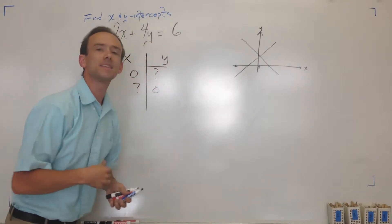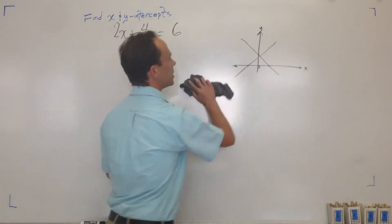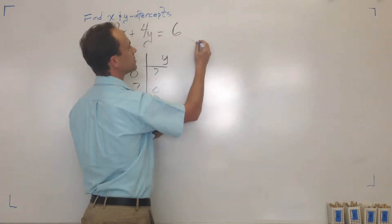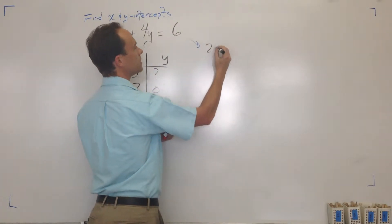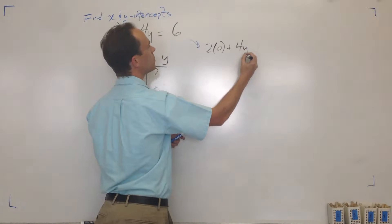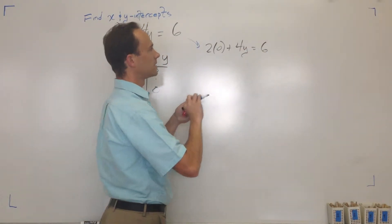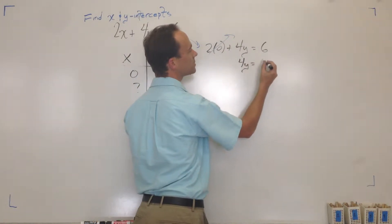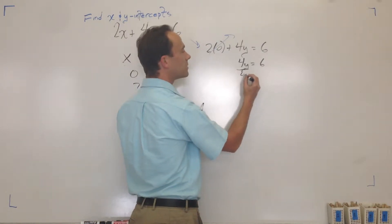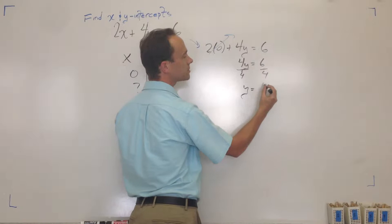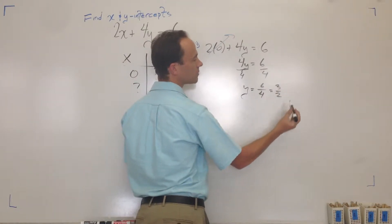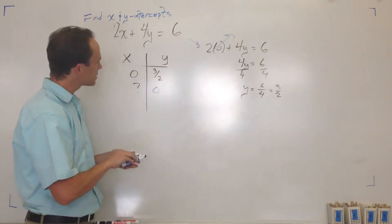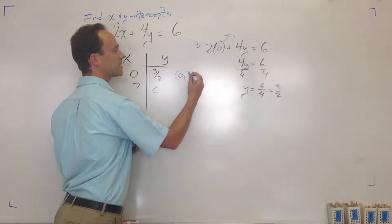Let's substitute. I've got 2 times zero plus 4y equals 6. Two times zero is zero — gone. So now I've got 4y equals 6. Divide by 4, and y equals 6 over 4, which is 3 over 2. That's your y-intercept. As a coordinate point, that's (0, 3/2).